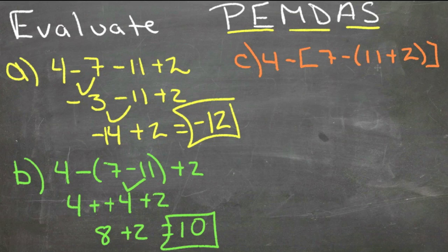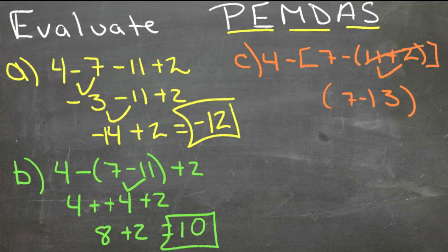So first we're going to complete 11 plus 2, that's 13. Now we have 7 minus 13 in parentheses. 7 minus 13 is negative 6, so now we have negative 6.